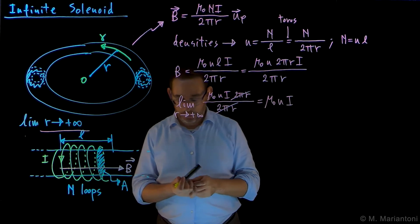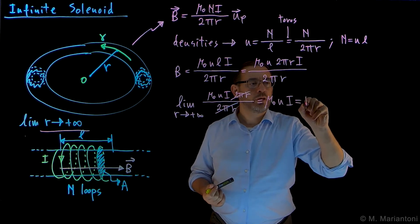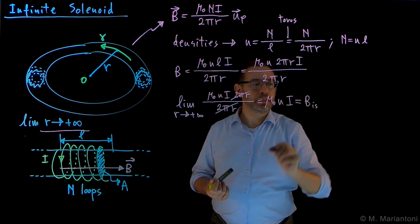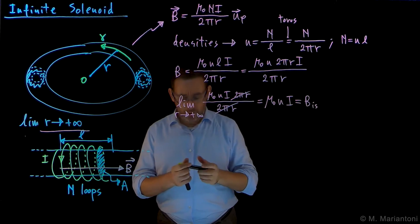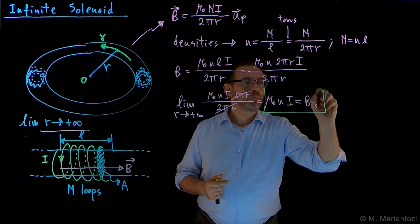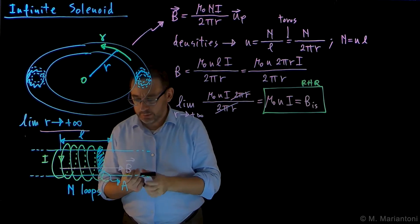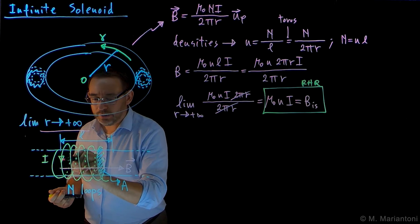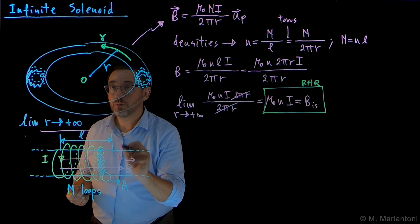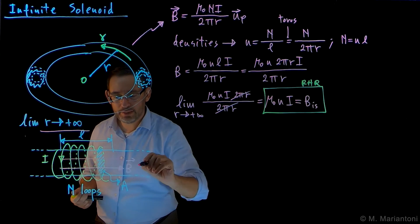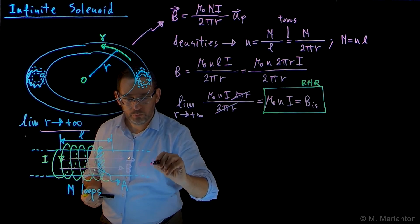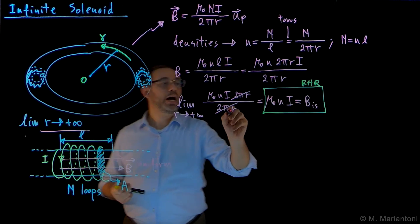the magnetostatic field within the infinite solenoid. And obviously, because of the right-hand rule, it has to point in this direction. But now, the only difference with respect to the case of the toroidal solenoid is that it's uniform. It does not depend on r anymore.